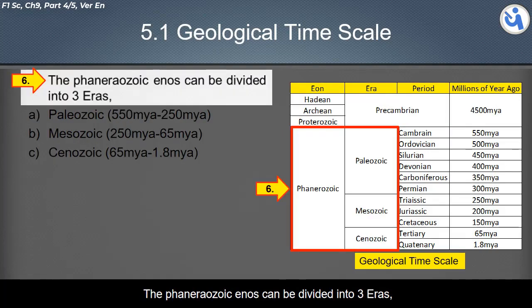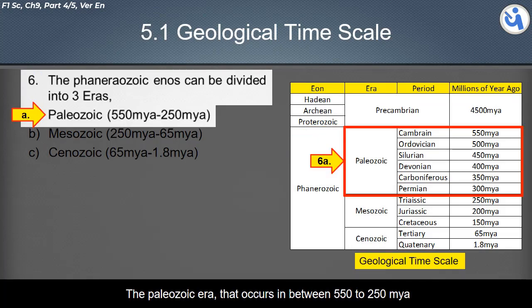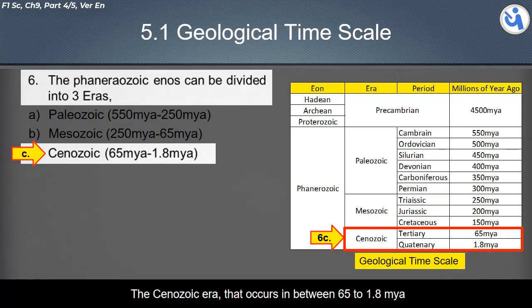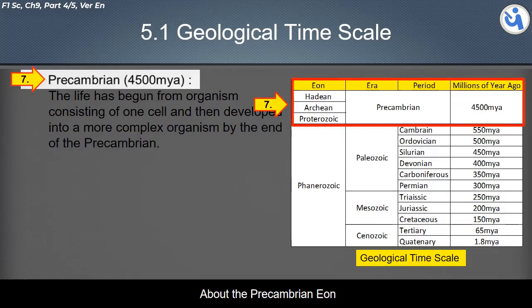The Phanerozoic eon can be divided into three eras: the Paleozoic era, which occurs between 500 and 250 million years ago; the Mesozoic era, which occurs between 250 to 65 million years ago; and the Cenozoic era, which occurs between 65 to 1.8 million years ago.